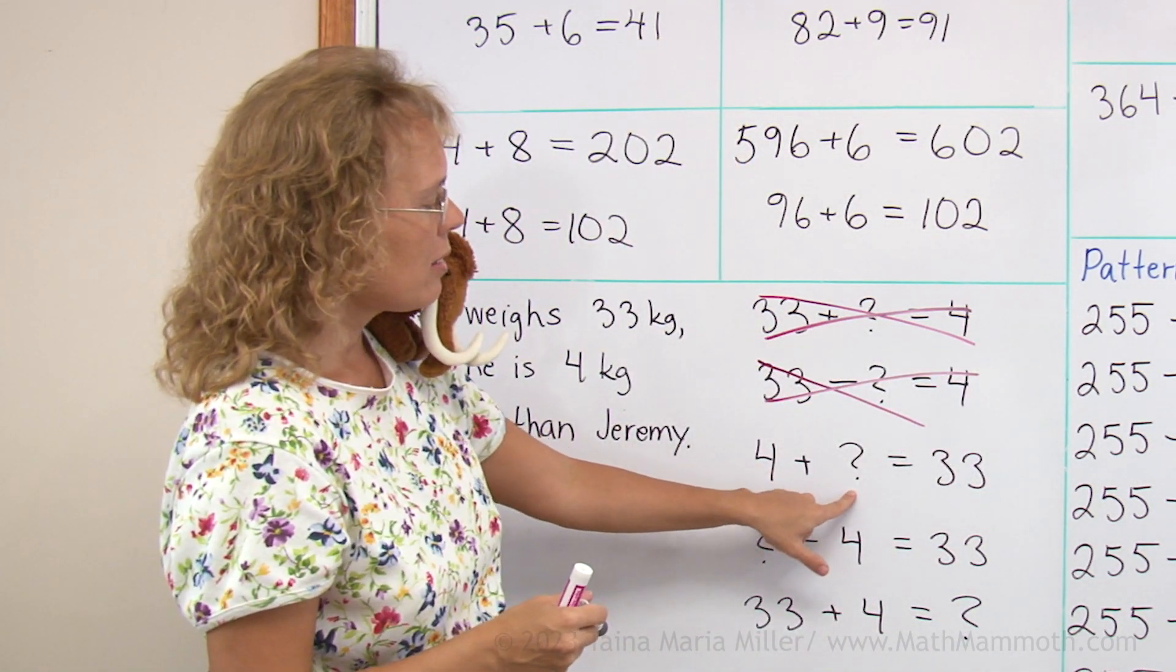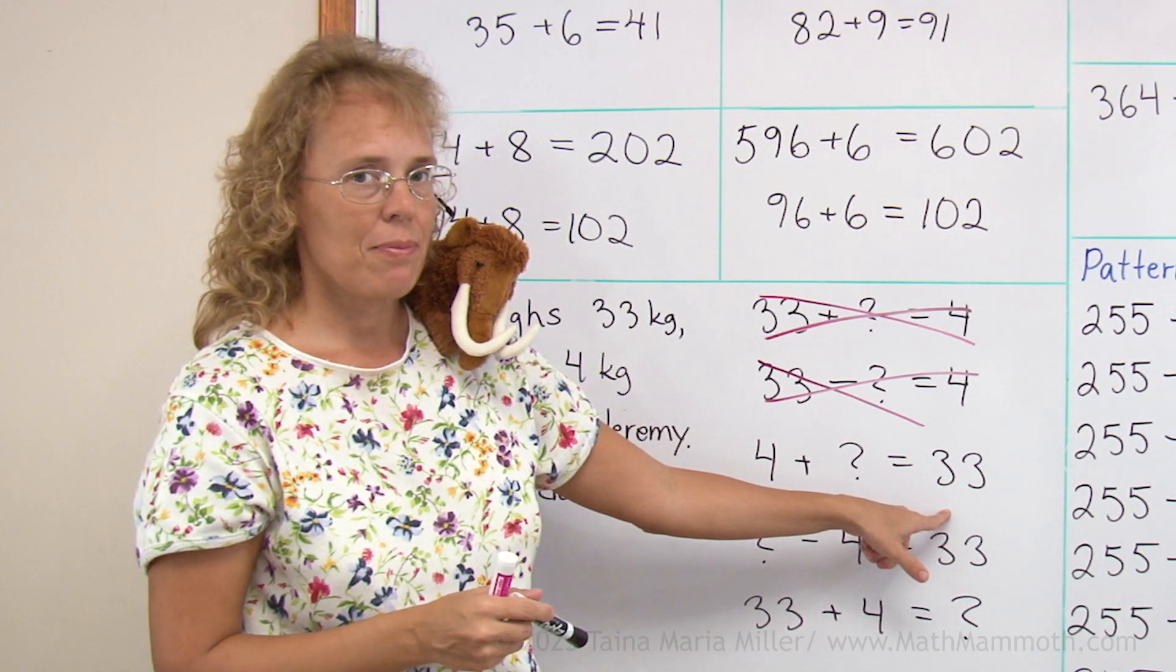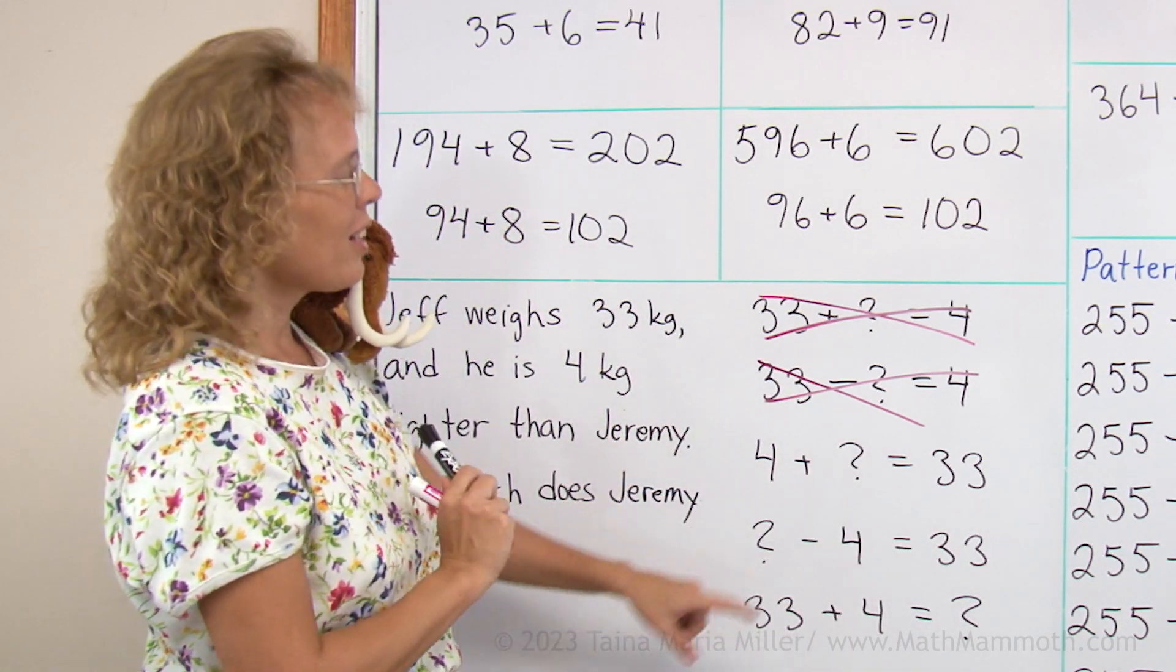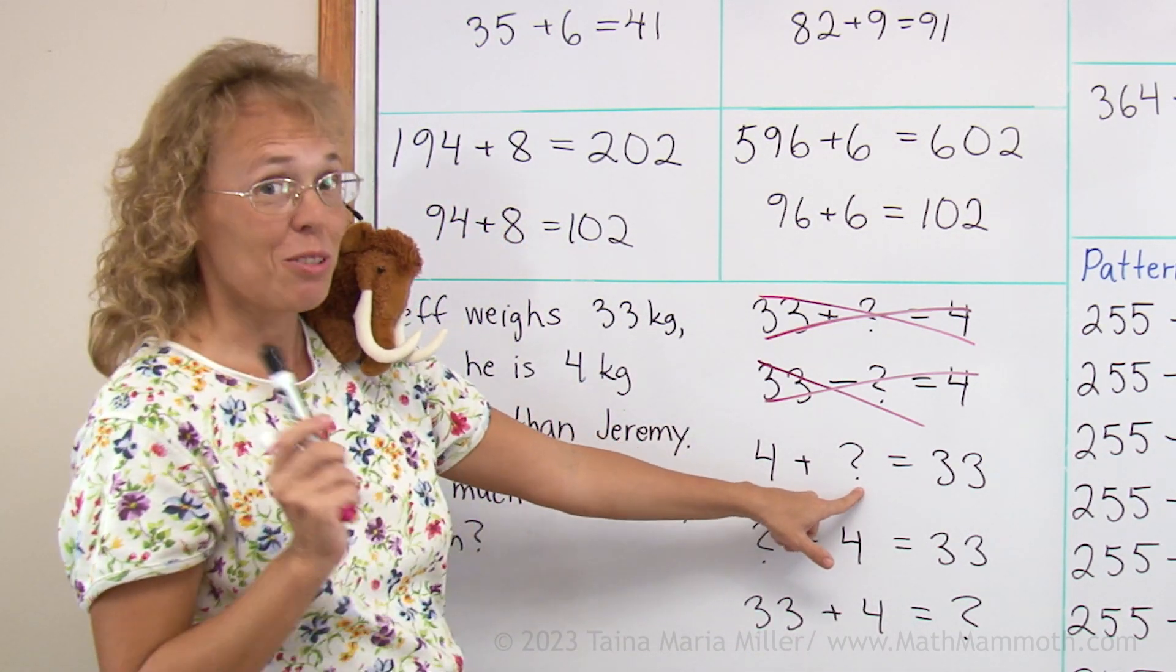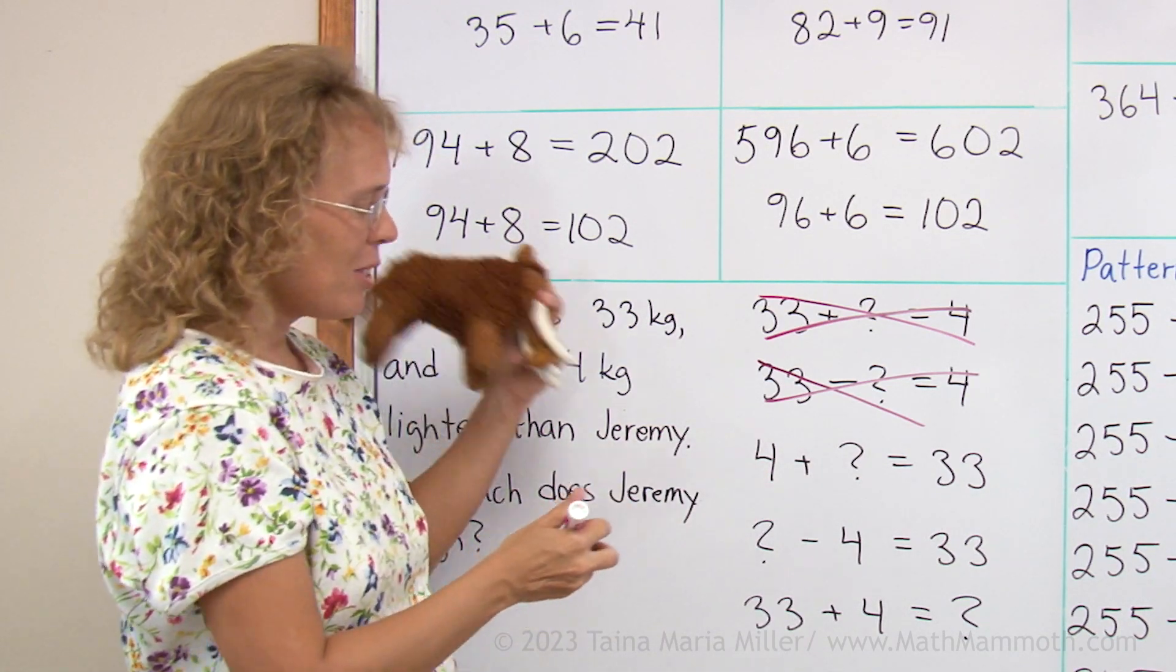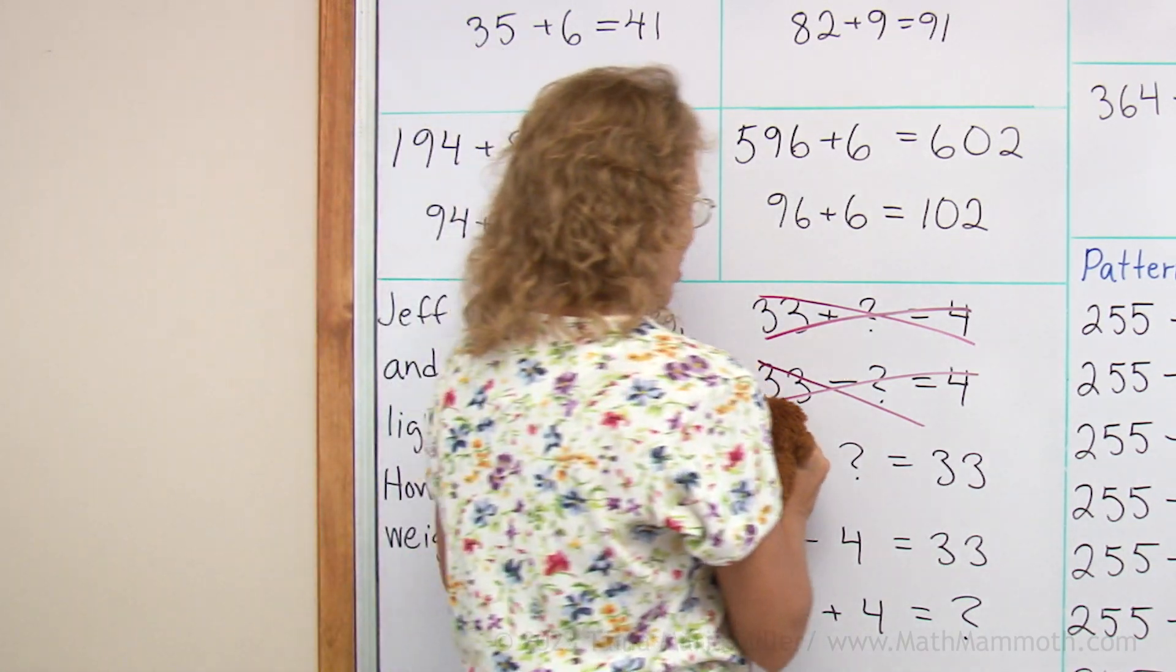4 plus a number makes 33. Now, you probably can see that what fits here is 29 again, right? But we know 29 is not the answer, so let's cross that one out too.